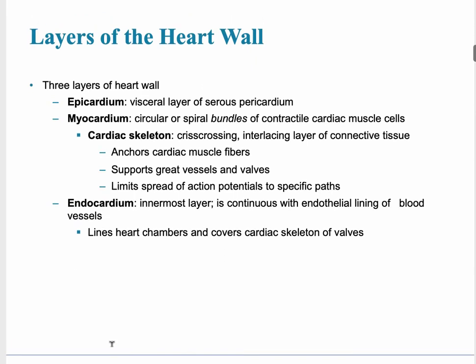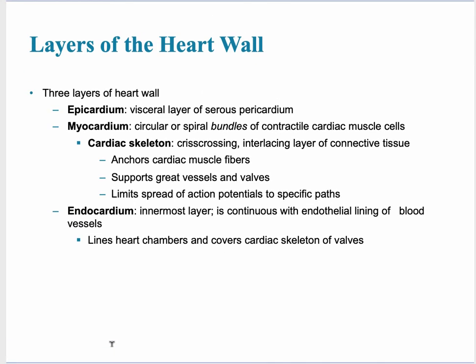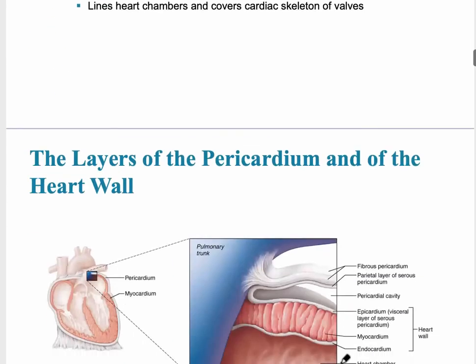The heart wall has three layers, similar to what we find in blood vessels. The innermost layer is the endocardium, which directly contacts the blood. The middle layer is the myocardium, where cardiac muscle is found, where cross bridges form and contraction occurs. The outermost layer is the epicardium.